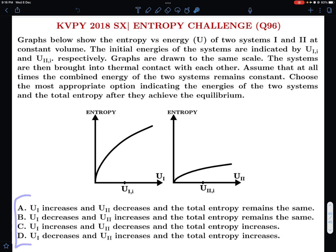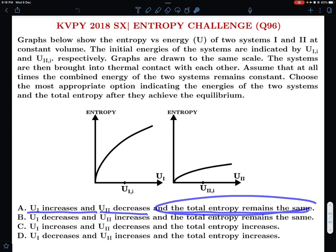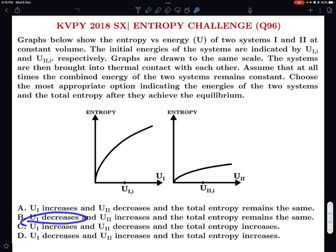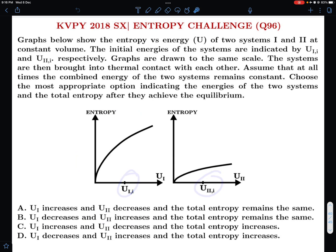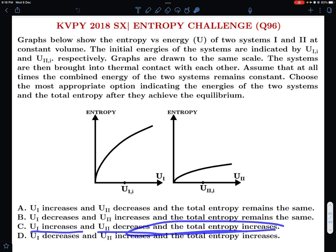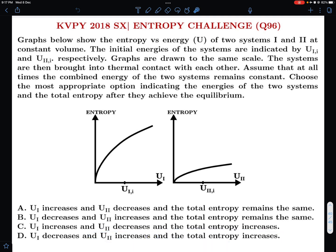We have to do this qualitatively. The first option is U1 increases, U2 decreases, and total entropy remains the same. The second option is U1 decreases and U2 increases, and total entropy remains the same. Option C is U1 increases and U2 decreases and total entropy increases. The last option D is U1 decreases and U2 increases and total entropy increases.